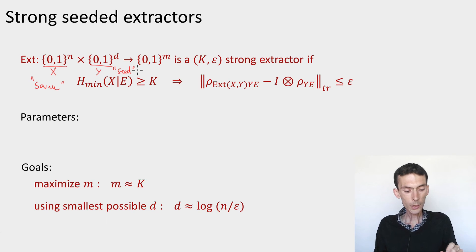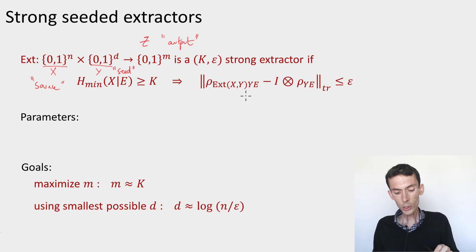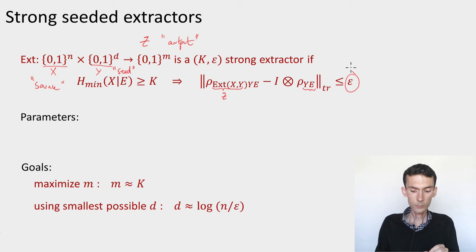And then we produce m bit string Z, which we'll call the output of the procedure. And so we'll say that this function is a (K,ε) strong seeded extractor, if it is the case that whenever X is such that the min entropy of X conditioned on side information E is at least K, then the output condition that the joint state of the output Z, the seed Y, and the side information E is indistinguishable from totally mixed state tensor product with the side information Y and E. So this should be at most epsilon and we'd like epsilon to be as small as possible. So that's a strong seeded extractor.